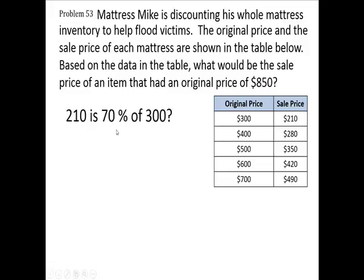Now I want to figure 70%, not of 300, but I want to do 70% of 850. It turns out if you do 70% of each of these numbers, you'll get the sale prices — you can find that out on a calculator. Simply take 0.7 times 400, you'll get this. 0.7 times 500 is this. 7 times 4 is 28, 7 times 5 is 35, 7 times 6 is 42, and 7 times 7 is 49. So 70% is what the people have to pay. We want to know: what is 70% of $850?